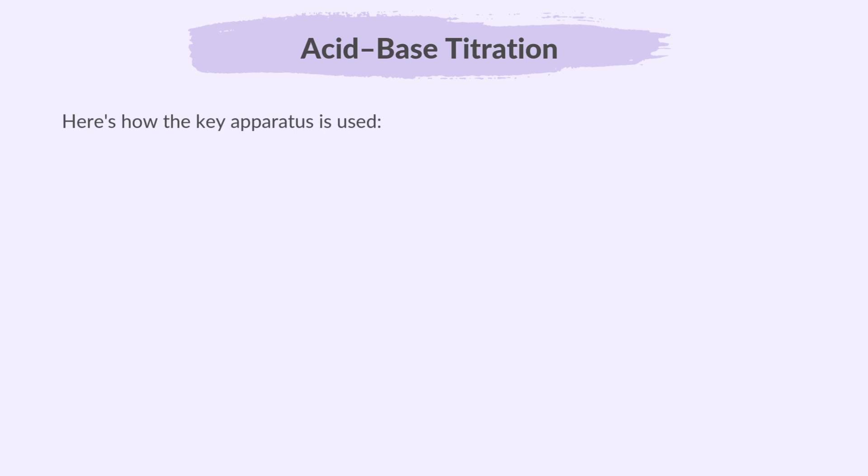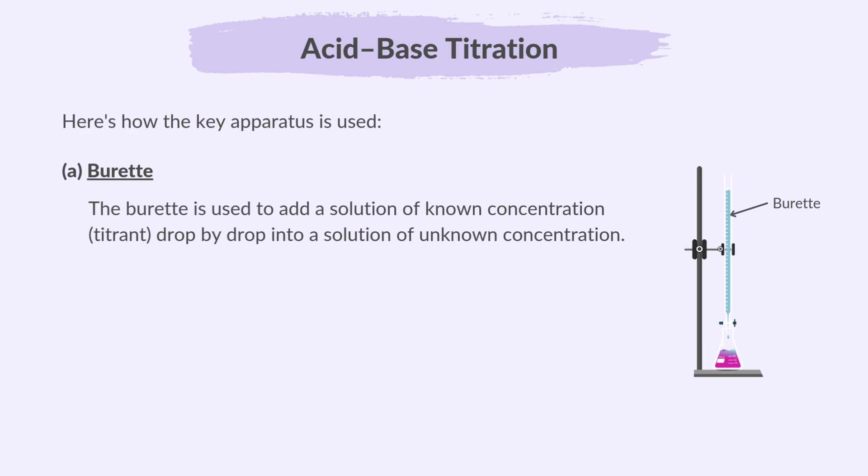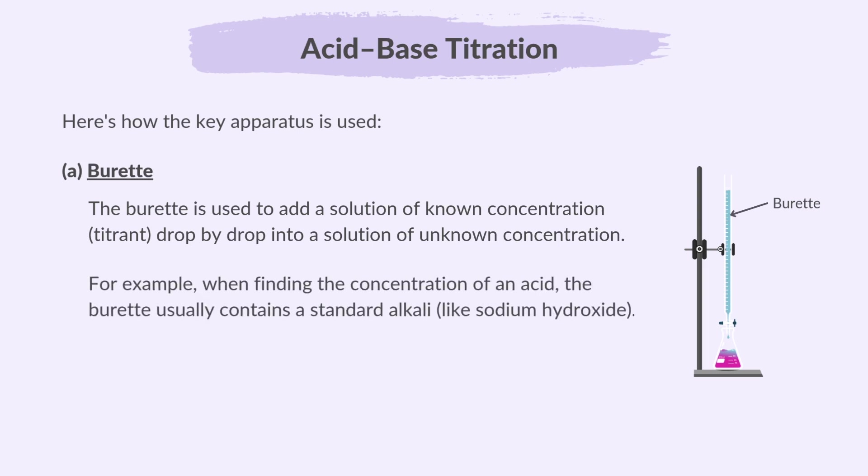Here's how the key apparatus is used. The burette is used to add a solution of known concentration drop by drop into a solution of unknown concentration. For example, when finding the concentration of an acid, the burette usually contains a standard alkali like sodium hydroxide.